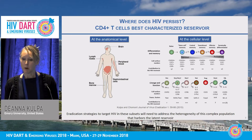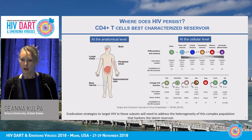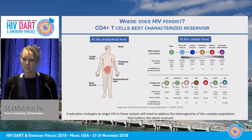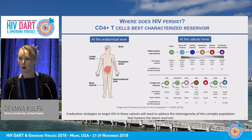In the memory CD4 T cell compartment, the central memory, transitional memory, and effector memory populations have all been shown to contain the latent reservoir in vivo. Subsets like TH17s, Tregs, and T follicular cells have all been shown to contain integrated HIV DNA, as well as reactivatable virus. Eradication strategies targeting HIV in all these different subsets need to address the heterogeneity of this complex population, whether considering a shock and kill or a block and lock approach.